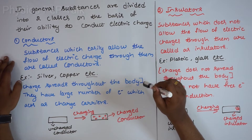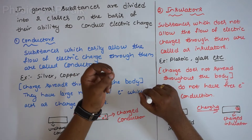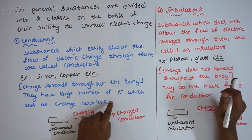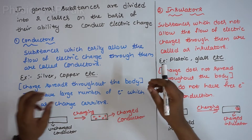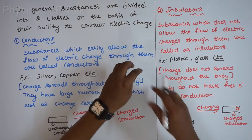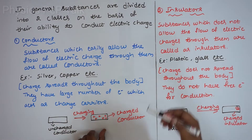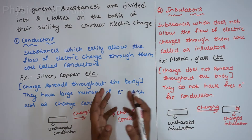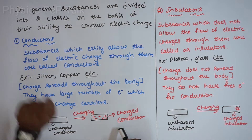Conductors have a large number of free electrons which act as charge carriers. The charge will not reside on one particular spot, but it gets spread throughout the conductor. The positive charge gets redistributed through the surface. This is the property of conductors.